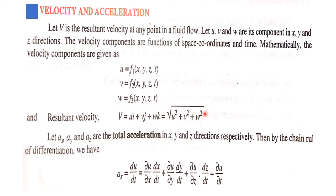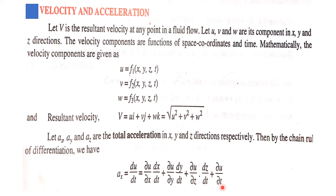Now let us study acceleration. Let ax, ay, and az be the total accelerations in the x, y, and z directions respectively. Acceleration is defined as the rate of change of velocity with respect to time. By the chain rule of differentiation, ax = du/dt = (∂u/∂x)(dx/dt) + (∂u/∂y)(dy/dt) + (∂u/∂z)(dz/dt) + ∂u/∂t.